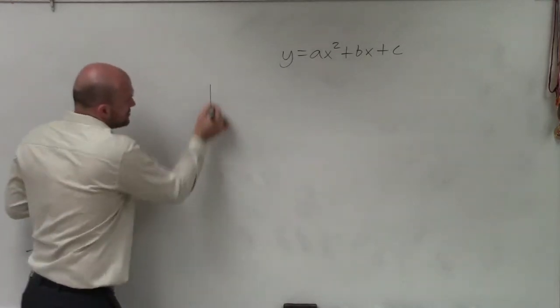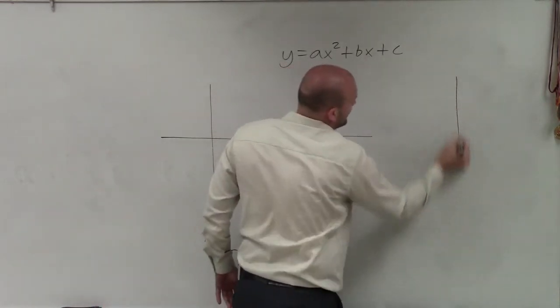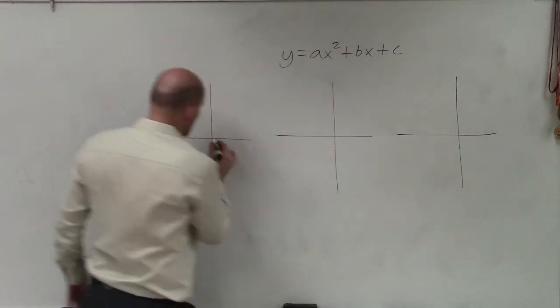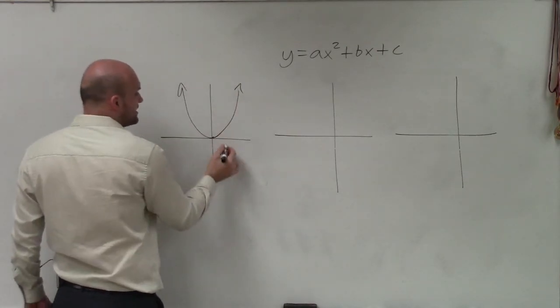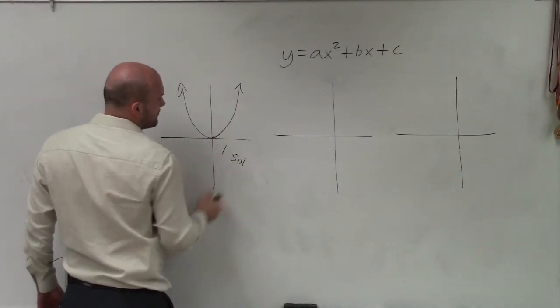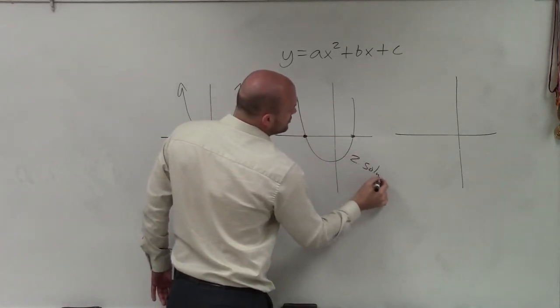Now again when we're looking at the quadratic the main important thing that we want to understand is a quadratic comes in three different systems. We can have a quadratic that's going to touch the graph and rebound meaning it's going to have one solution. We can have a quadratic that's going to intersect at two points which is two solutions.